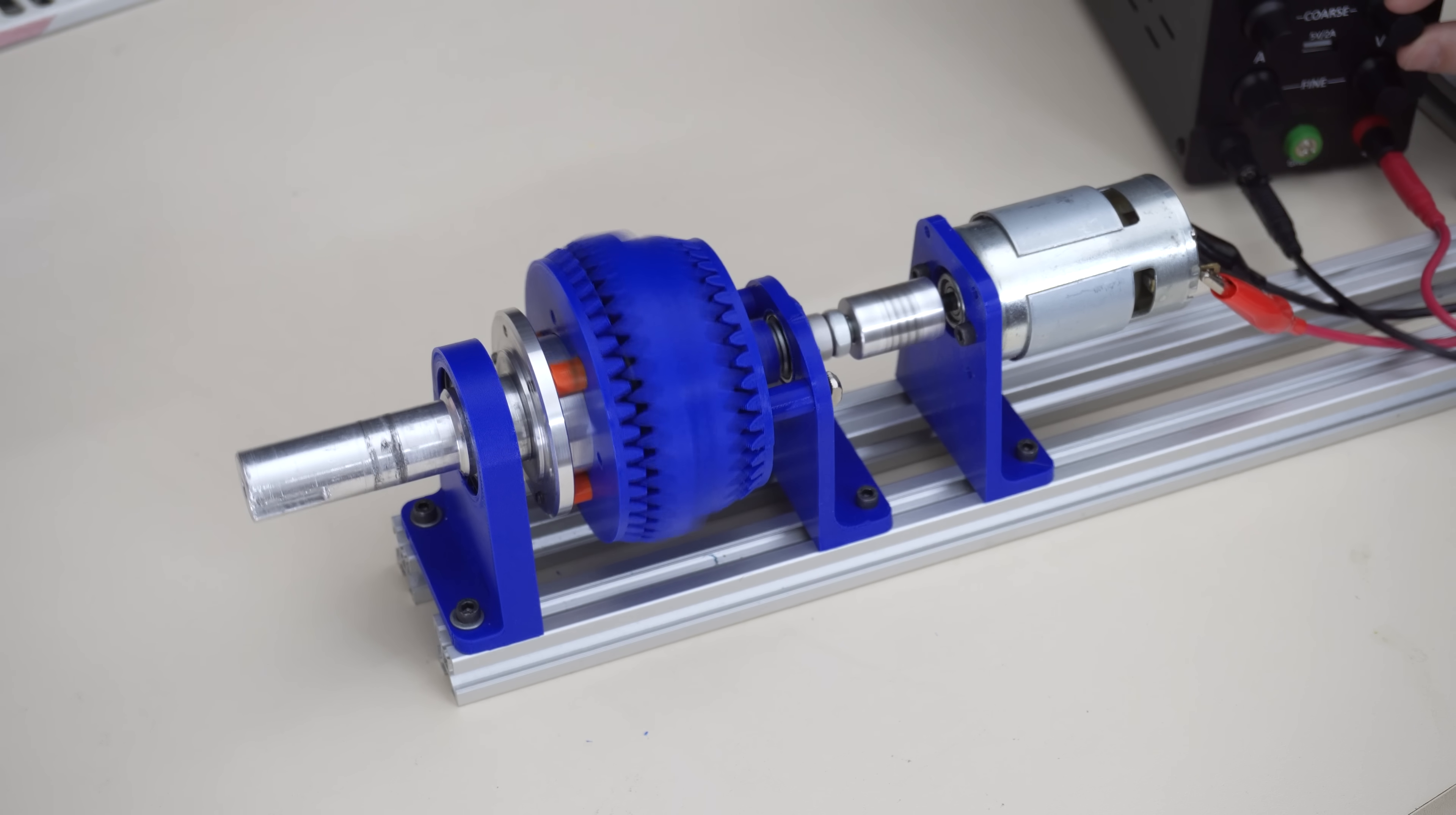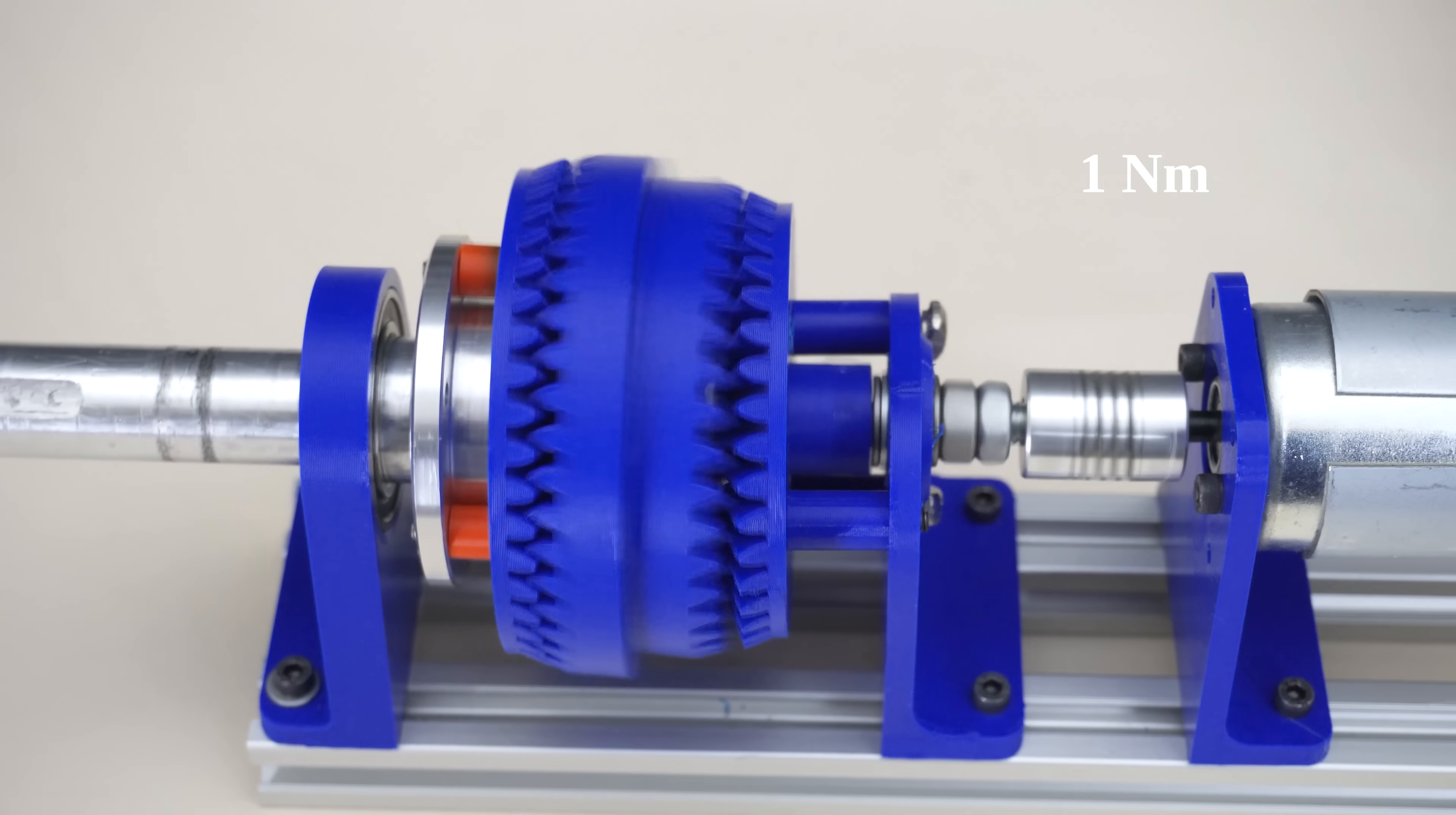This gearbox naturally generates very high tooth forces even with small input torques, due to the extremely high gear ratios it provides. If I were applying one newton meter with this model right now, I would have obtained around 400 newton meters of torque at the output, which as you can imagine is quite high. And notice this happens in just one stage.